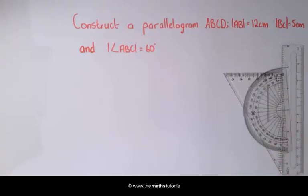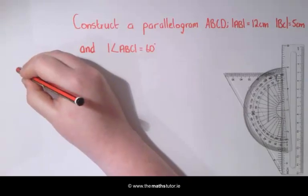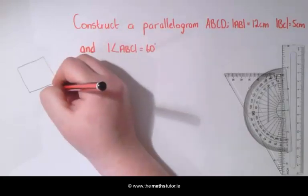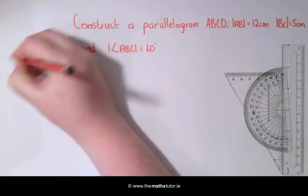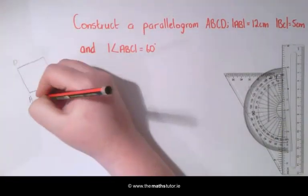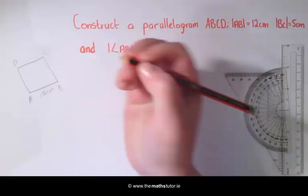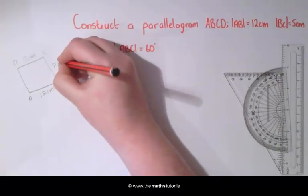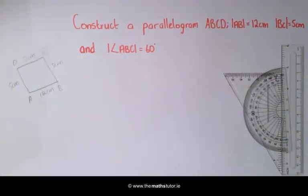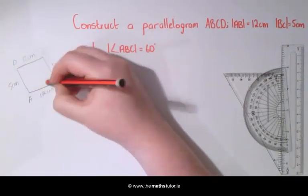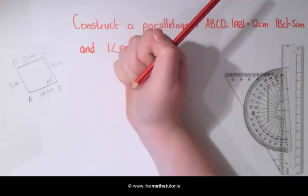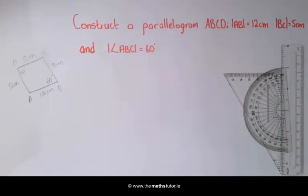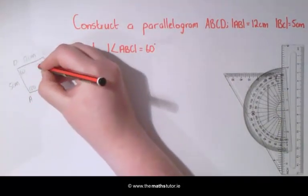The first thing we are going to do is draw a rough sketch, ABCD. We know AB is 12cm so therefore DC is 12cm. We know that BC is 5cm so we know AD is 5cm. And the angle ABC is 60 degrees, so therefore this angle here is 60 and the remaining angles are 120 and 120.